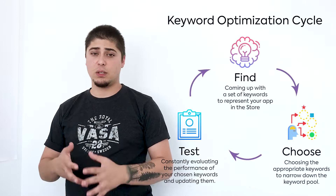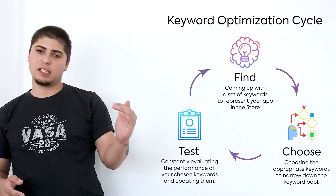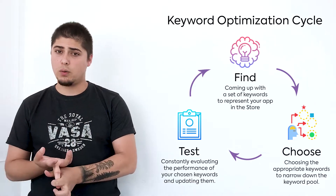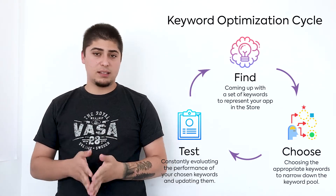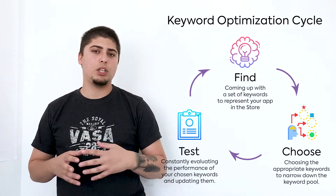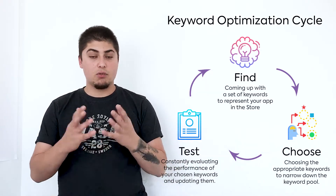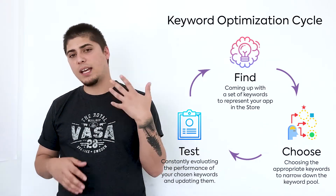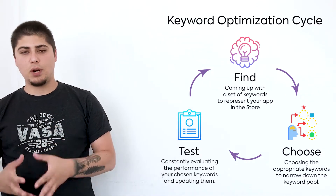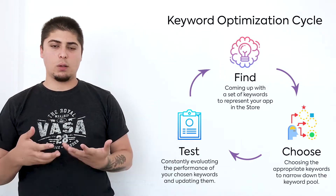The central process of keyword optimization is often referred to as the keyword optimization cycle. We call this a cycle because it's not just a single practice. First you find the keywords, you choose which keywords you want to go with, and then you test your results. But it doesn't end there — after your initial testing, you will usually have to revisit those keywords, remove some of them, go back to the drawing board, find more keywords, choose from them, and test again. As you keep doing this process, you have an even more optimized keyword list.